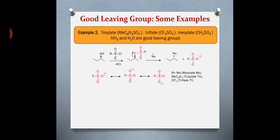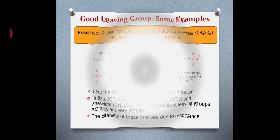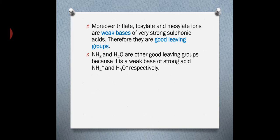Looking at the mechanism, the sulfonate group shown in red is displaced easily by the nucleophile in nucleophilic substitution reactions. The sulfonate formed is highly stable because of resonance, and this stability drives the reaction in the forward direction, making the reaction faster. Moreover, triflate, tosylate, and mesylate ions are weak bases of very strong sulfonic acids, and therefore they are good leaving groups, following the same rule: good leaving groups are weak bases.